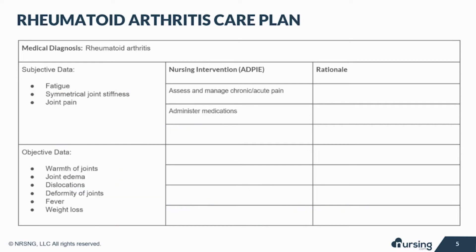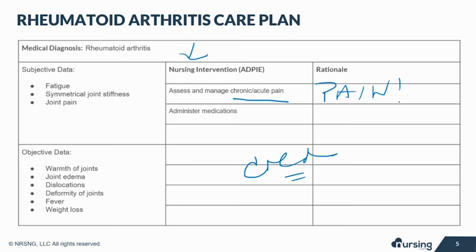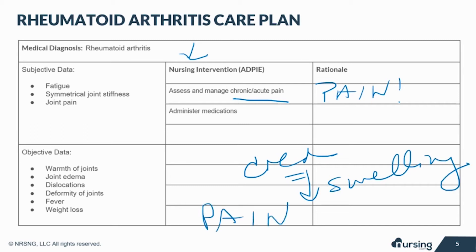Nursing interventions are a super important part of a care plan. The primary complaints of patients with RA are intense pain and stiffness of the joints. To manage this pain, use pillow supports, warm compresses to loosen stiff joints and relax the muscles, cold compresses to numb the pain and reduce the swelling, and finally PRN pain medications.